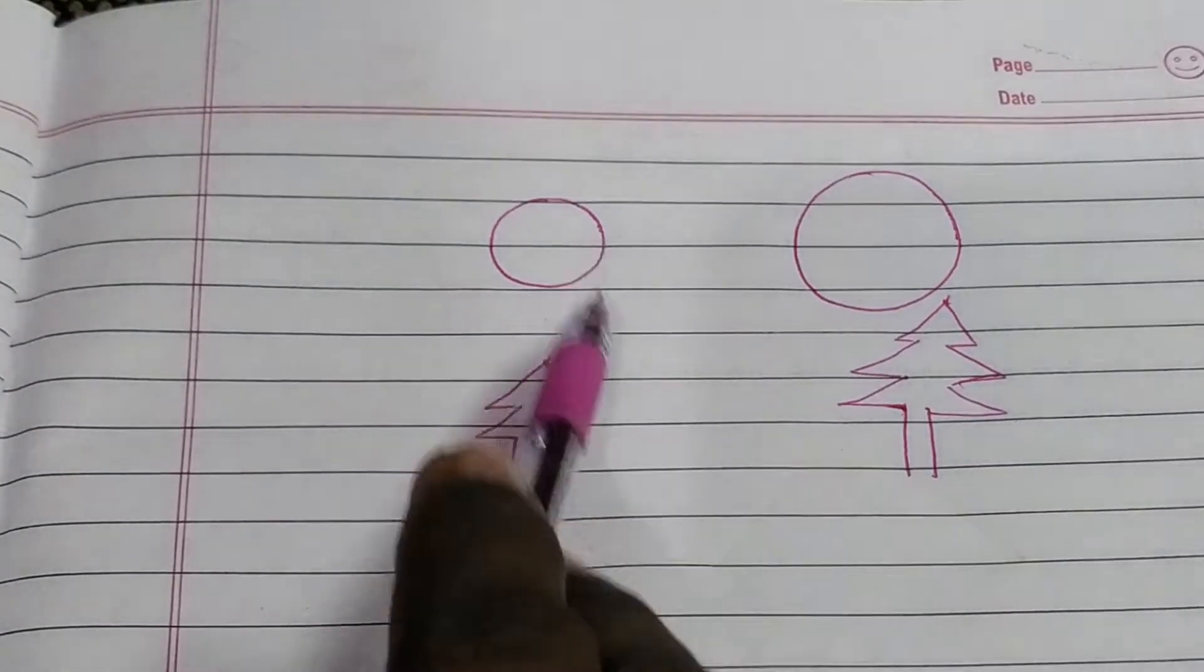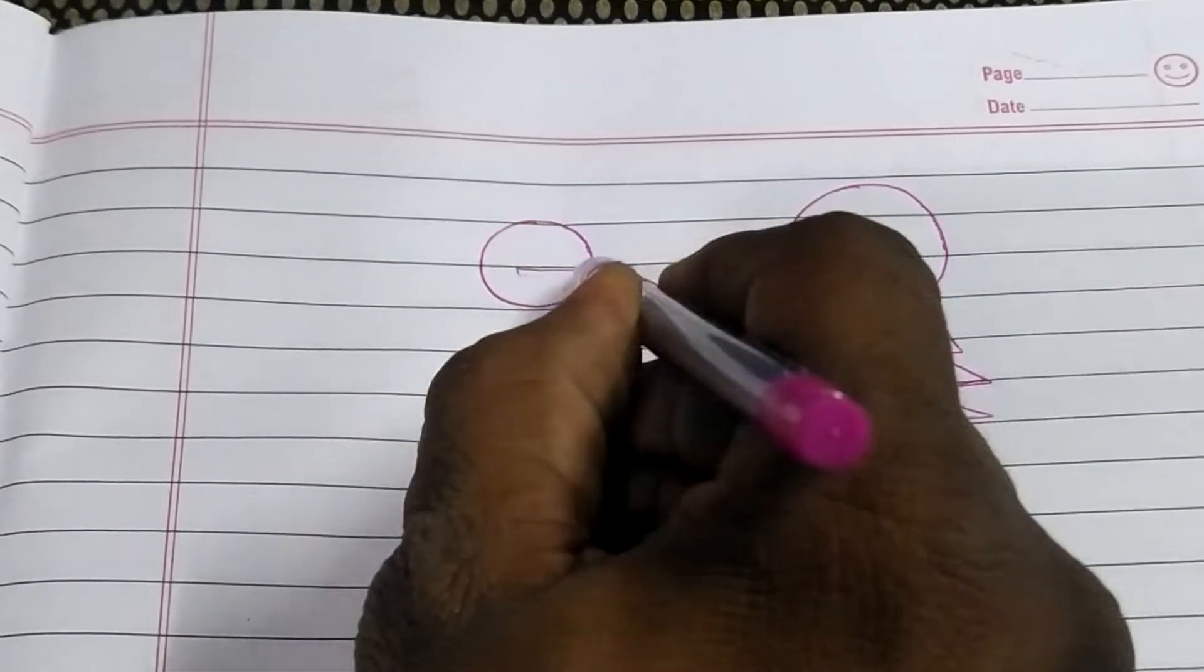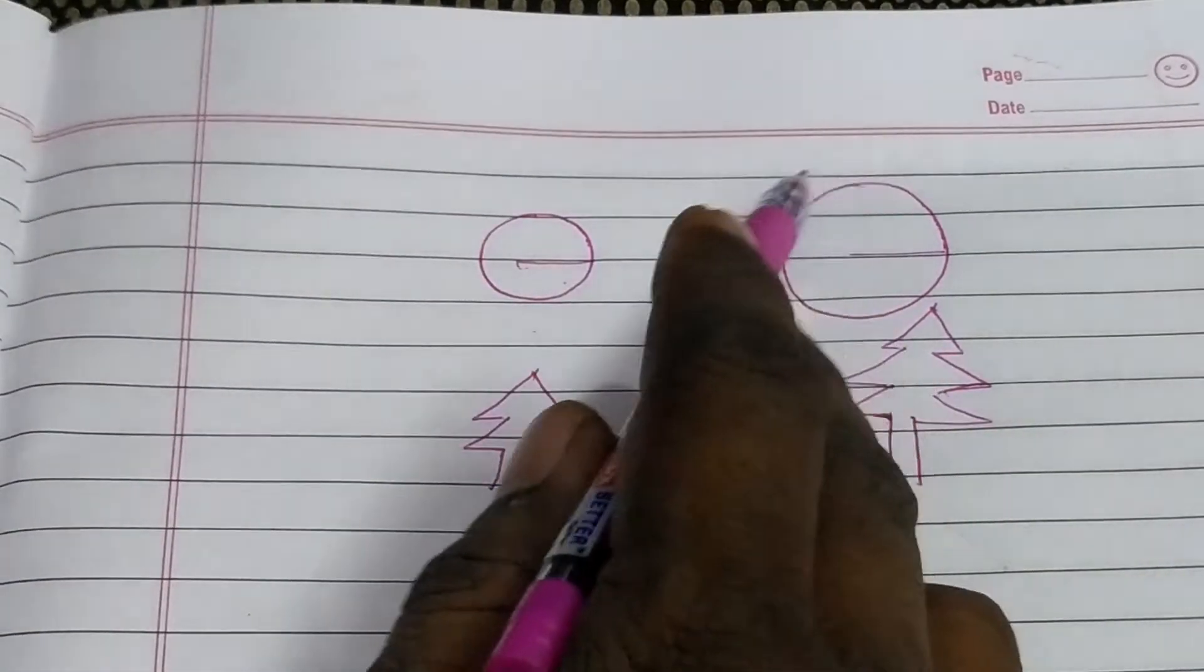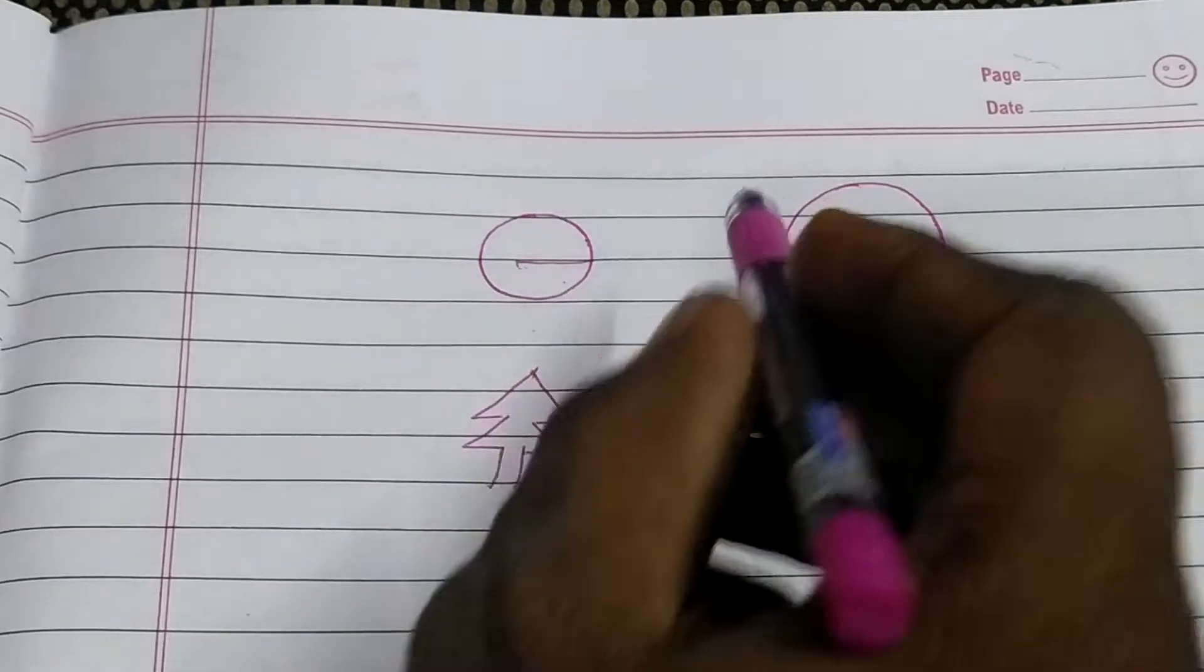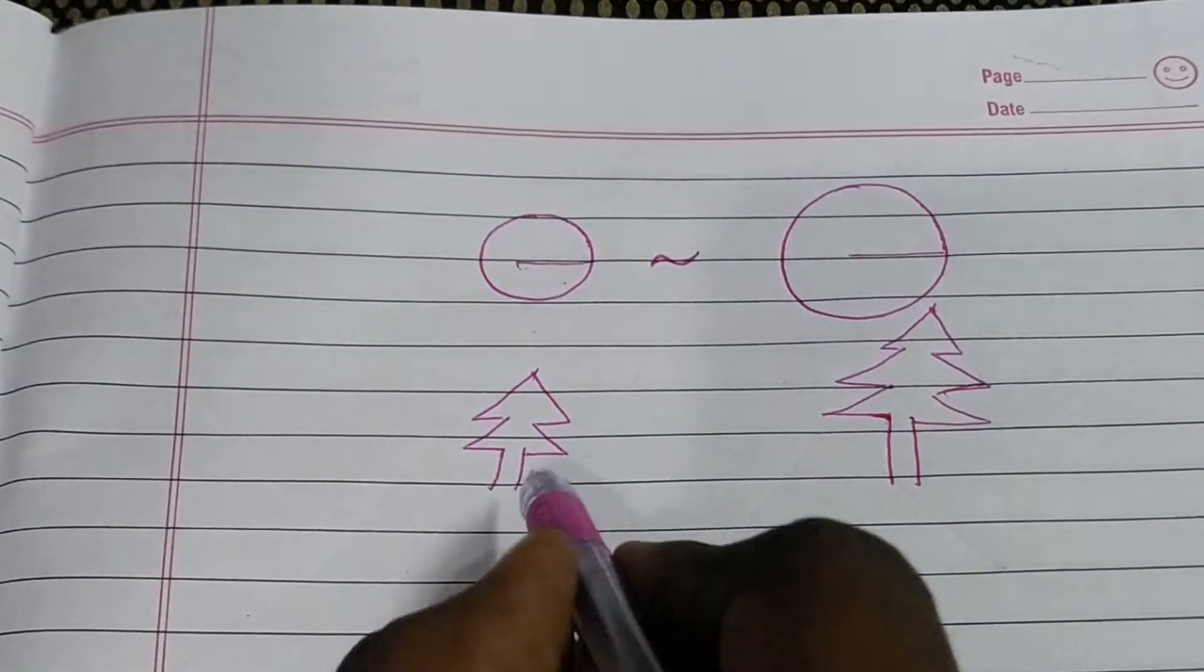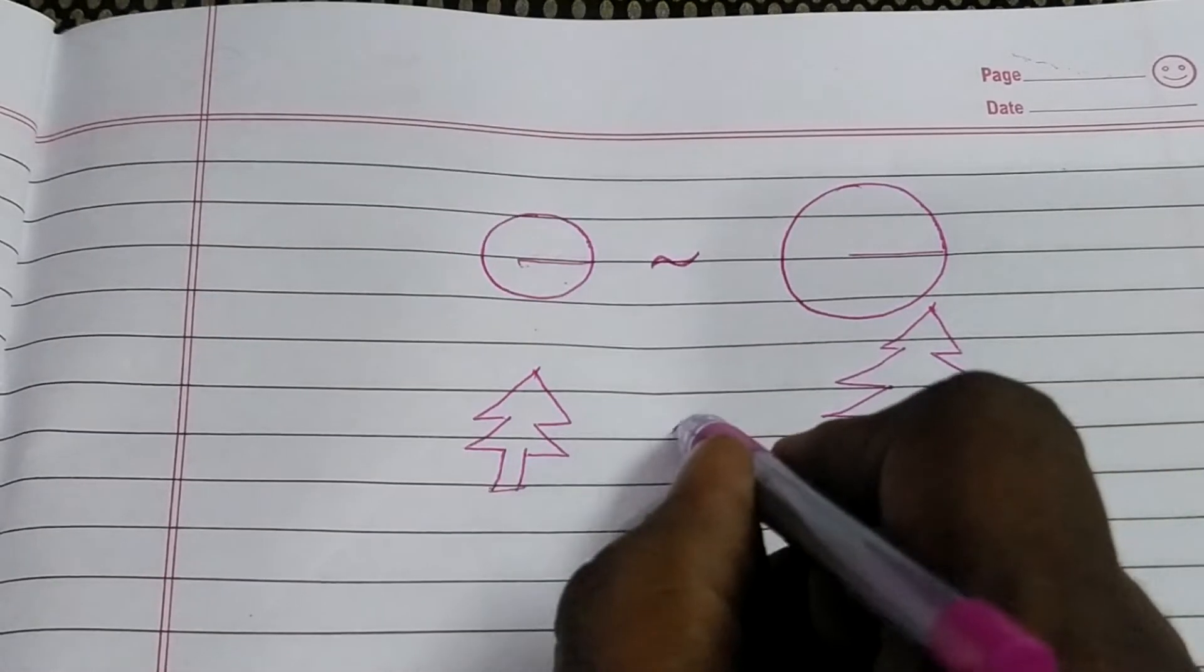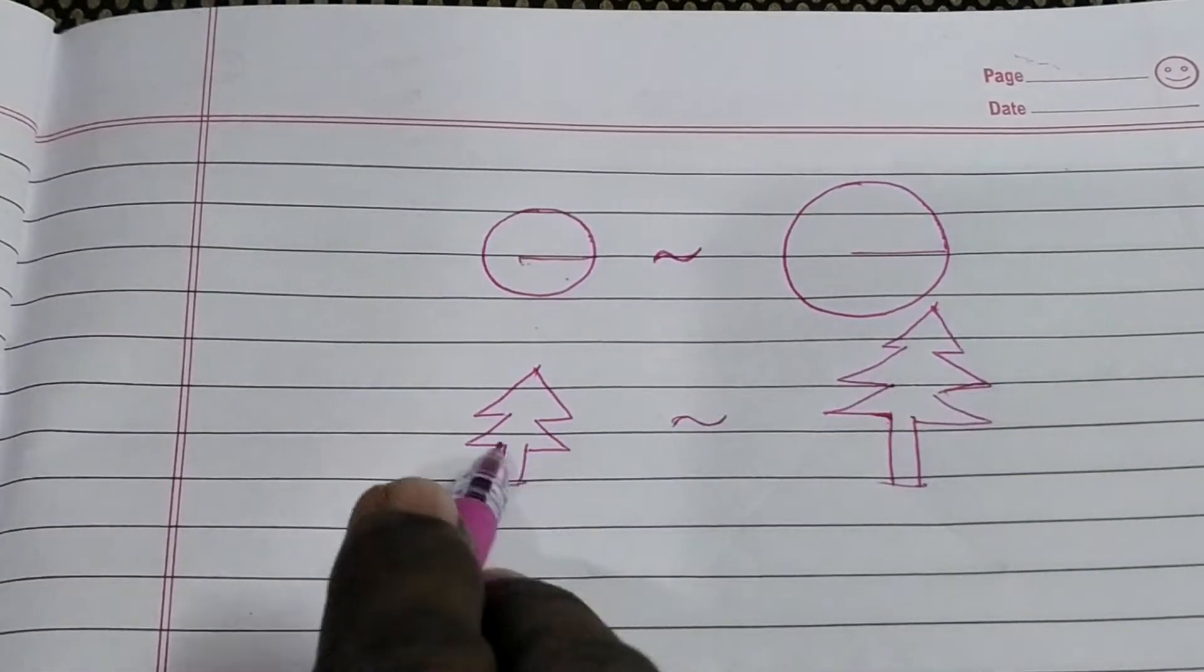As we can see in this diagram, there are two circles. One is smaller one and other is bigger. But these two are look alike. Then we can say that these two are similar. Similarly, these two trees, they are looking alike. They are also similar to each other. But size varies.